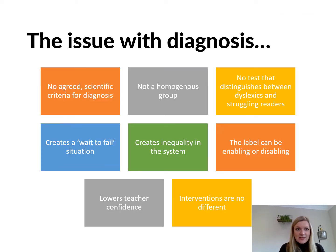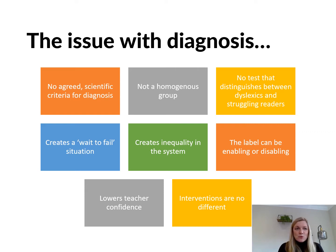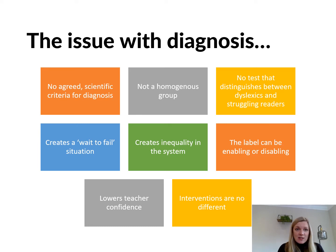It's important to be transparent about the big issues with diagnosis, because most local authorities and psychologists no longer use the label to describe those with significant literacy difficulties and aren't willing to make that diagnosis. Firstly, there are no agreed scientific criteria for diagnosis, and there aren't assessments that can distinguish between a child who's struggling with reading and one who's dyslexic. Where children are given that diagnosis it's based on a judgment of their performance on a variety of assessments, which many argue lacks objectivity.